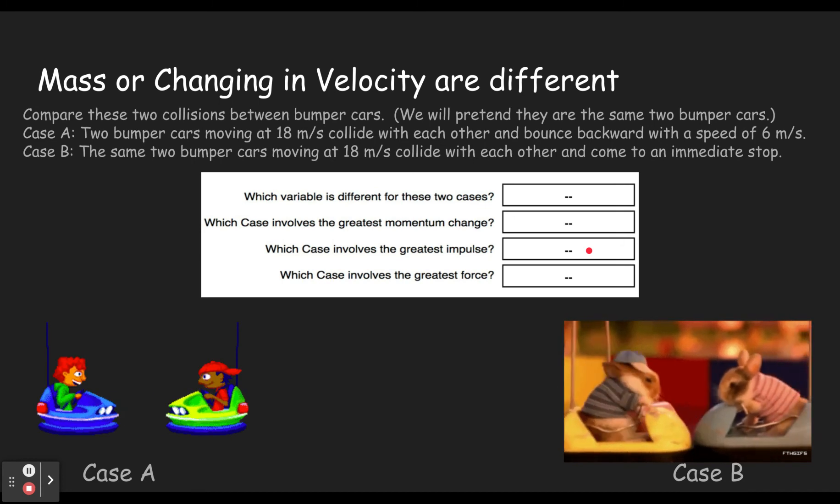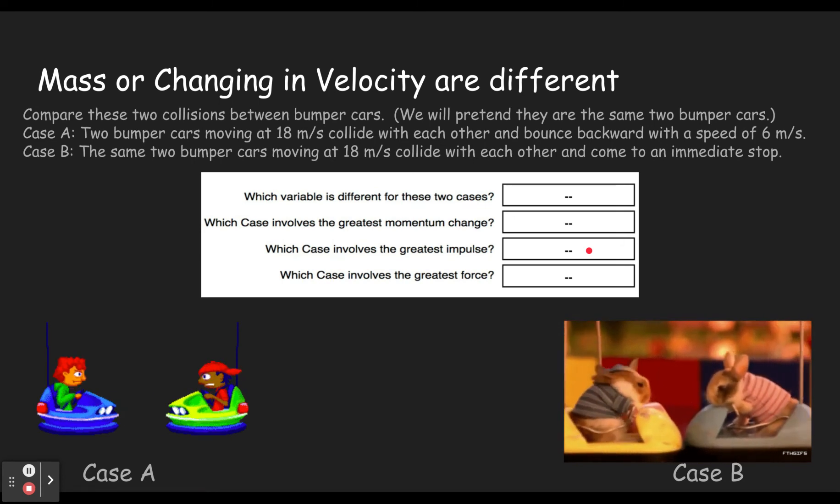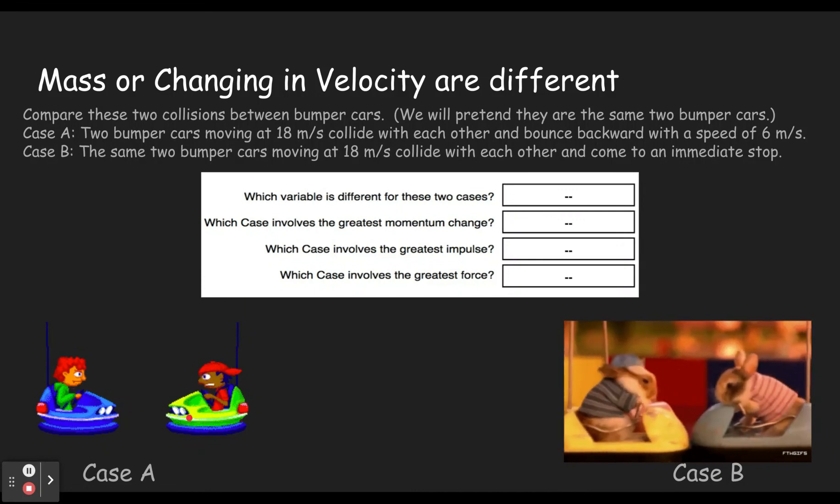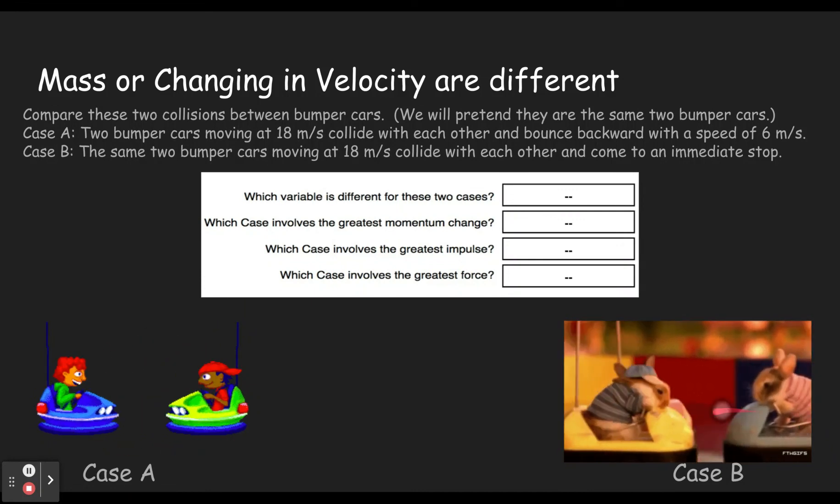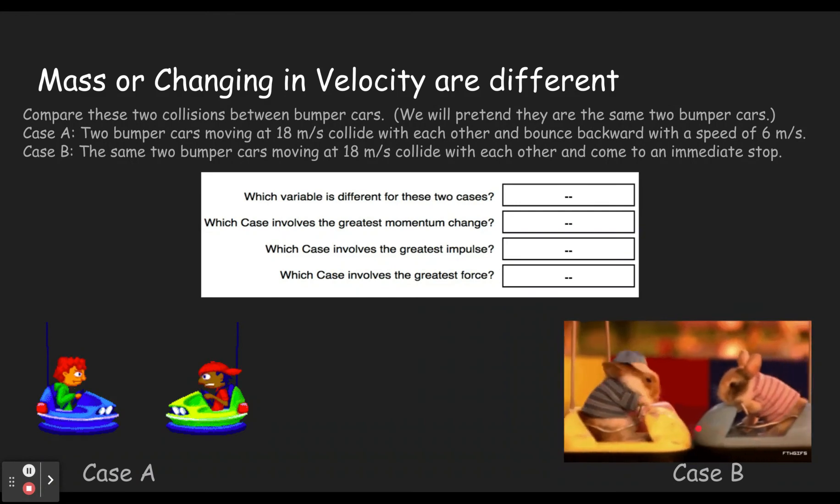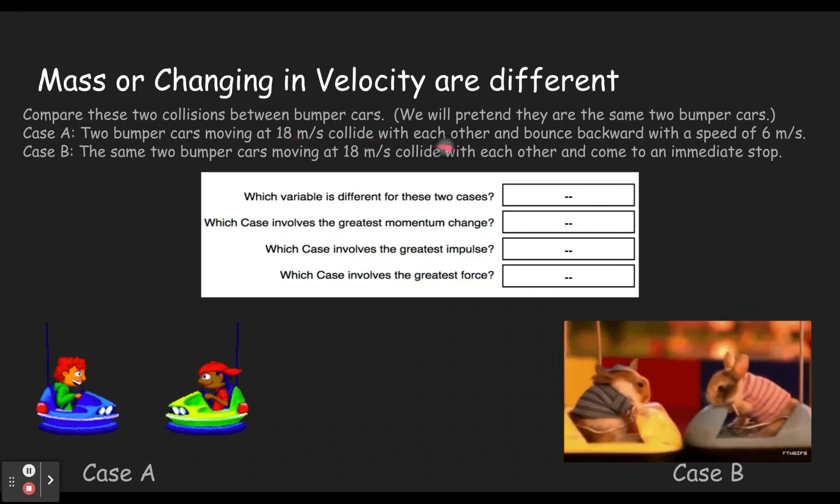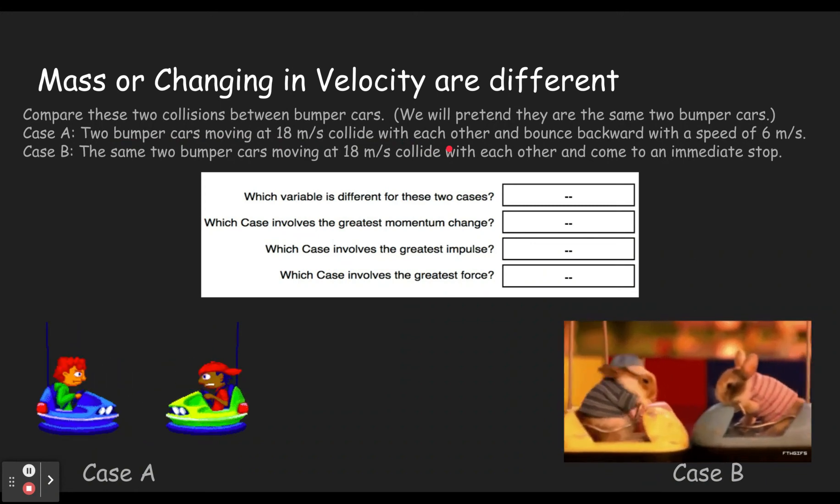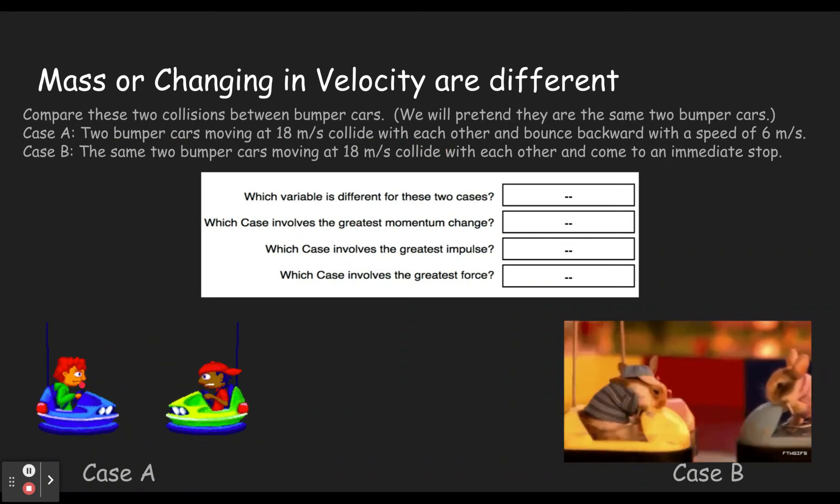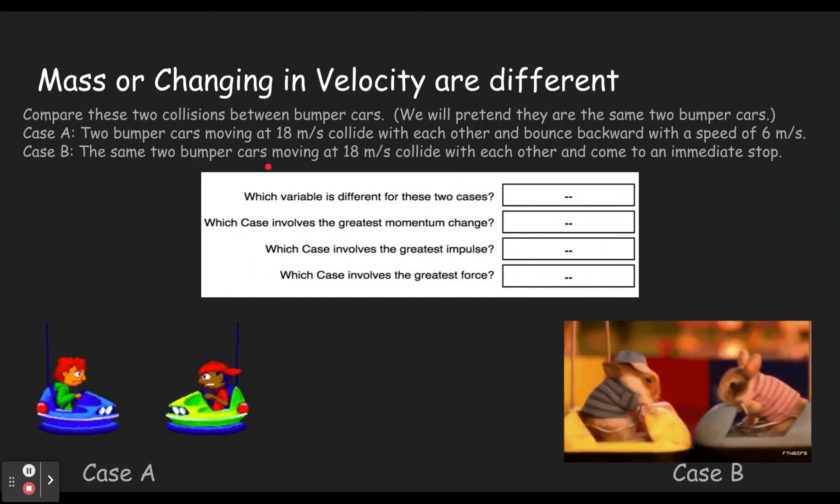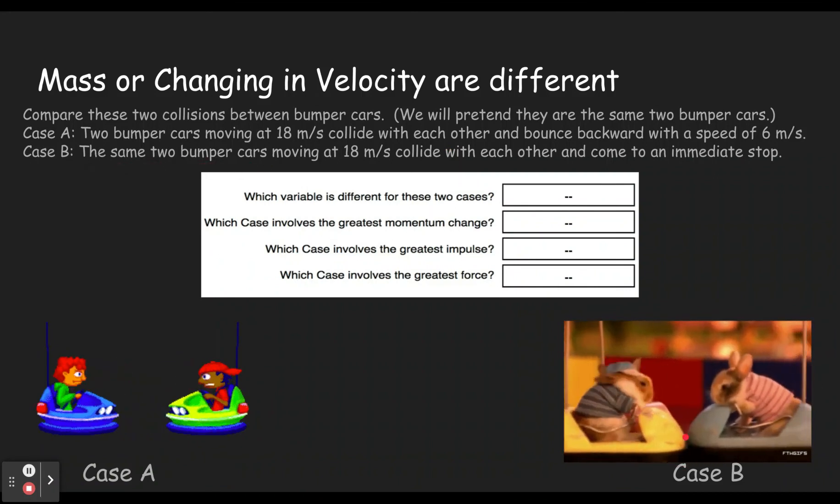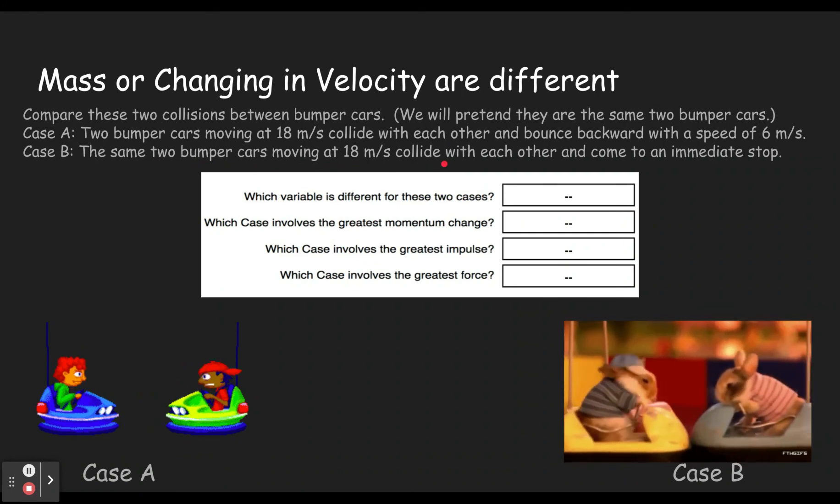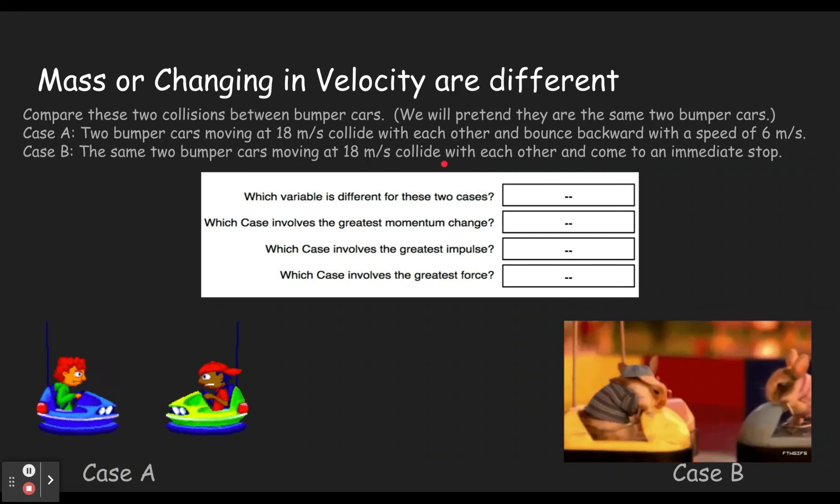Compare these two collisions between bumper cars. We'll pretend they're the same mass for the bumper cars. Two bumper cars are moving at 18 meters per second. They collide with each other and bounce backward with the speed of six meters per second. Now the same two bumper cars, moving at 18 meters per second, they collide with each other and come to an immediate stop.